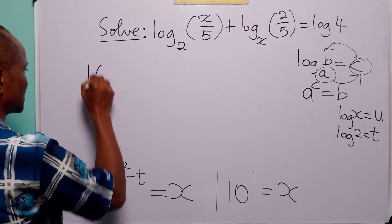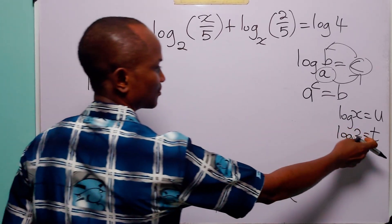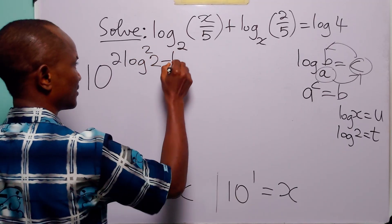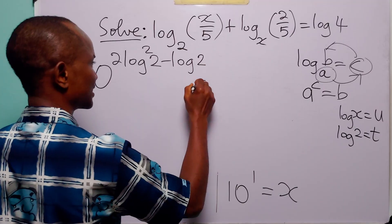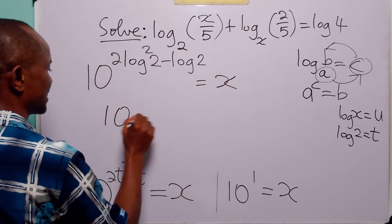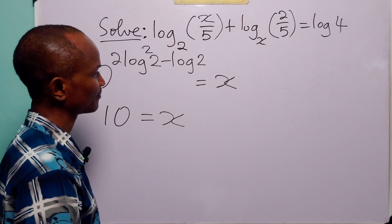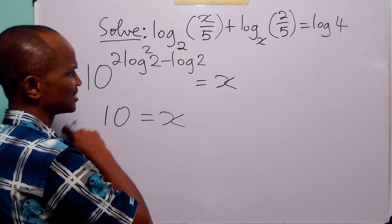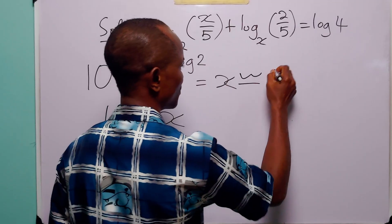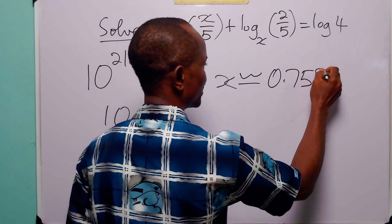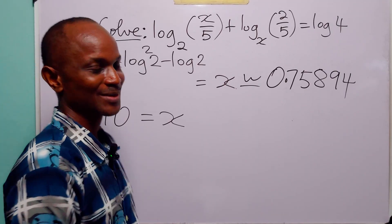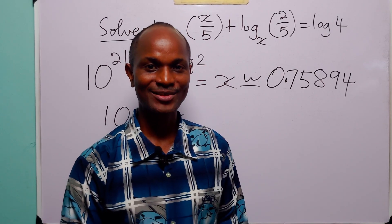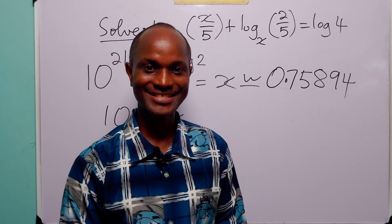Writing out correctly: x equals 10^(2(log 2)² minus log 2) and x equals 10, so these are the two values of x that satisfy the given logarithmic equation. Evaluating the first with a calculator, x is approximately 0.75894. I hope you learned something new — if you enjoy such content please subscribe to the channel, leave a like to support the channel, thanks for watching and see you in the next one.